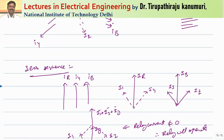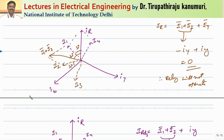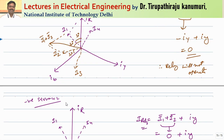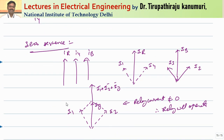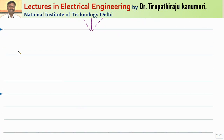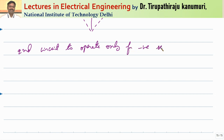We can observe from this that by using this bridge circuit, the relay senses both the negative sequence component and the zero sequence component, and will not operate for the positive sequence component. If you do not want your circuit to operate for the zero sequence component — only for negative sequence — there is a second circuit available.